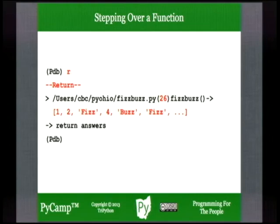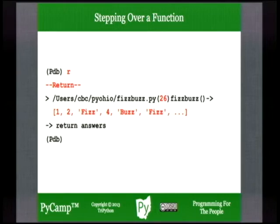'r' will go to the end of the function, return its value, and stop at the next statement after the function call. It will show you it's back at line 26 and that the fizzbuzz function has been called and returned a value — there's the answer, returned from the fizzbuzz function.